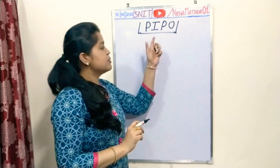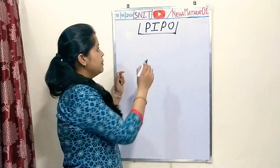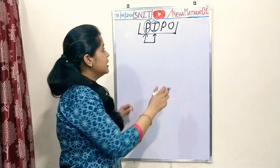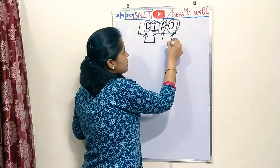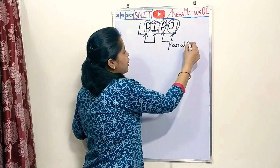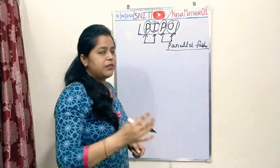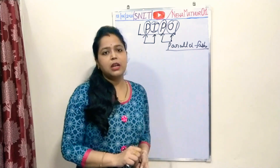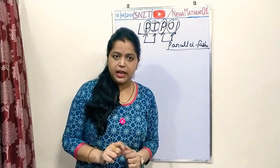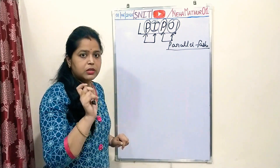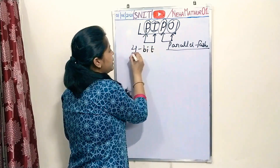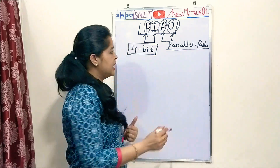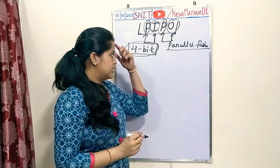As the name suggests, in this mode of operation data is entered in parallel form — parallel input. So the data entered in the register will be in parallel form. Similarly, the output we are retrieving will again be in parallel form. So the data we are entering as well as retrieving, both are in the form of parallel fashion. This is Parallel Input Parallel Output.